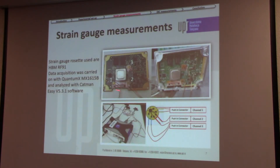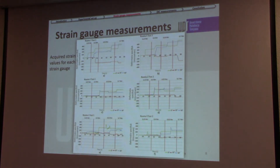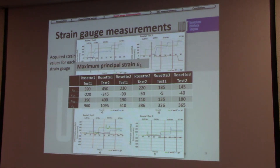Three rosettes were placed at the corners of the microprocessor. The gauge used was HMBA RF91 and data acquisition was done with Quantum MX and analyzed with CATMAN. The results show the evolution of strain for each rosette across two tests. Based on the principal strain formula, it can be observed that rosette number one exceeded the limit of 700 microstrain.